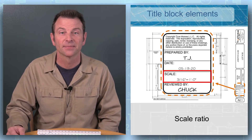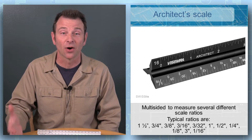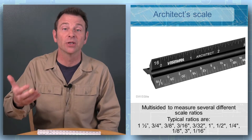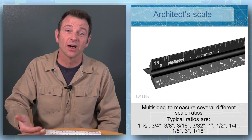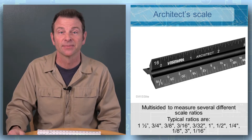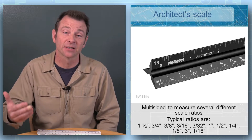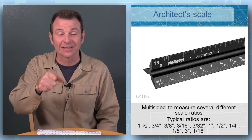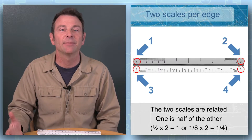To measure on plans that are drawn to specific scales, we need to use an architect scale. These have several different scales built into them, and we use them to pull specific measurements off of the plans, as long as we know what scale those plans were drawn to. The previous slide called out three-sixteenths scale in the title block — that's three-sixteenths equals one foot — and on this measuring device you can see the three-sixteenths scale, always identified at the end.